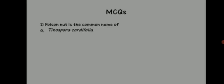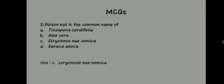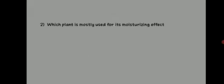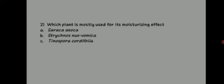Coming to the MCQs: Question 1 — 'Poison nut is the common name of which plant?' Options: Tinospora cordifolia, Aloe vera, Strychnos nux vomica, Saraca asoka. The answer is C — Strychnos nux vomica. Question 2 — 'Which plant is mostly used for its moisturizing effect?' Options: Saraca asoka, Strychnos nux vomica, Tinospora cordifolia, Aloe vera. The answer is D — Aloe vera.